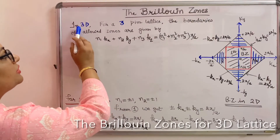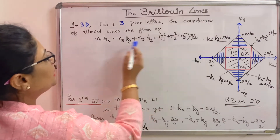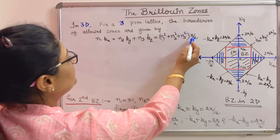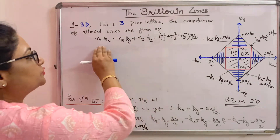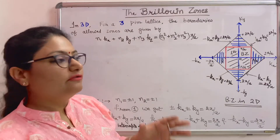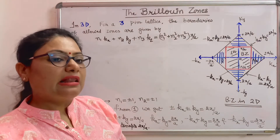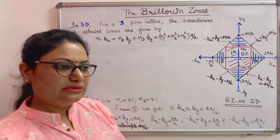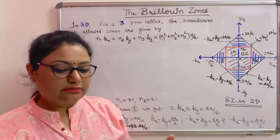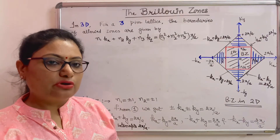For a 3D lattice, the Brillouin zones are given by the equation n1*kx plus n2*ky plus n3*kz equals (n1 squared plus n2 squared plus n3 squared) times pi by a. By choosing values of n1, n2, and n3, we can draw the first, second, third Brillouin zones for a 3D lattice. In summary, Brillouin zones are the allowed ranges of k values representing allowed energy values for a particle in a 1D, 2D, or 3D lattice.